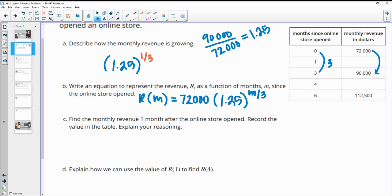Find the monthly revenue one month after the online store opened. So we will take the 72,000, and then we'll multiply it by 1.25, and then to the one third,